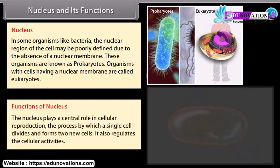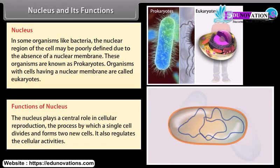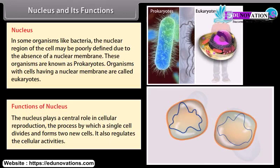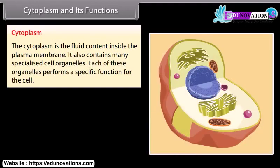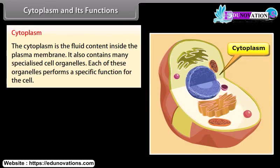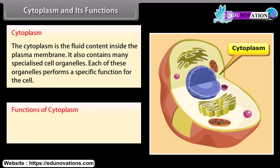The nucleus plays a central role in cellular reproduction — the process by which a single cell divides and forms two new cells. It also regulates cellular activities. The cytoplasm is the fluid content inside the plasma membrane. It also contains many specialized cell organelles, each of which performs a specific function for the cell. In the cytoplasm, all cell organelles are embedded.